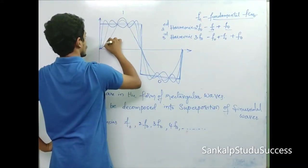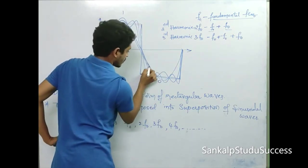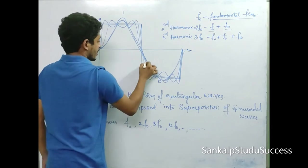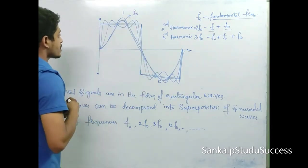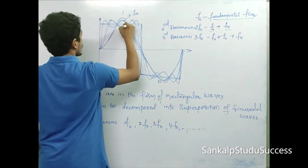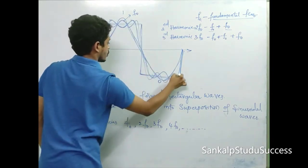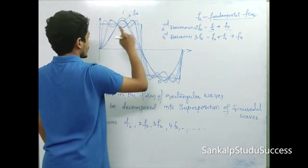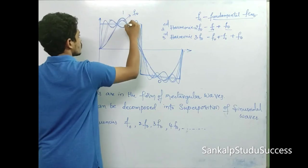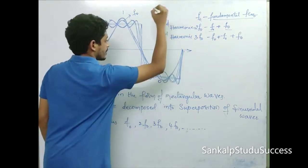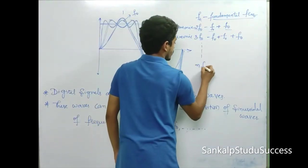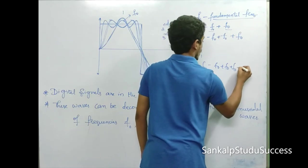The fundamental frequency F0 has one cycle. The second harmonic has two cycles within the same period. The third harmonic has three cycles. So the n-th harmonic is nF0, and a digital signal requires up to n harmonics — meaning it theoretically requires infinite bandwidth. The shape becomes more rectangular as more harmonics are added.